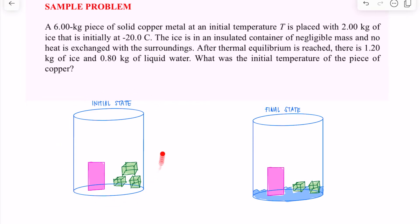This is the initial configuration or initial state. You have your copper at some temperature T and your ice over there. The ice is represented by three cubes, but overall the mass of that is 2 kilograms and initially at negative 20 degrees Celsius.